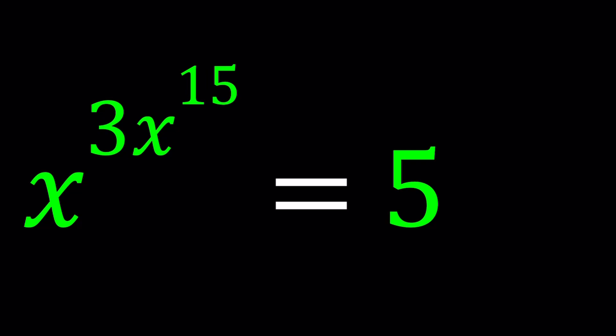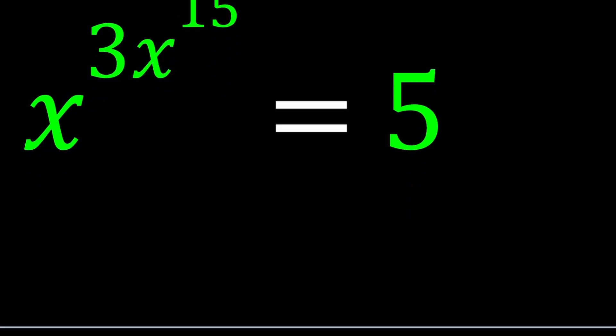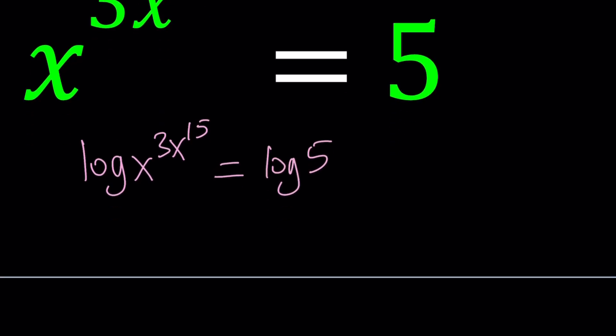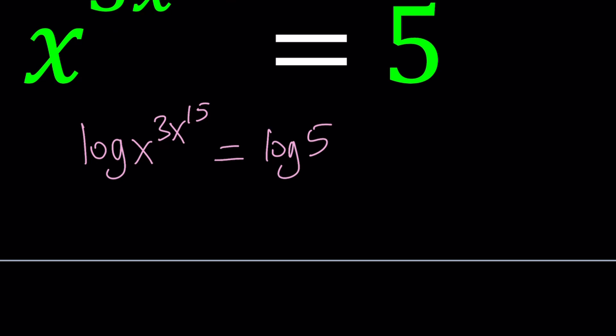So one thing you can do is log both sides and the base doesn't matter that much. You can use natural log, you can use base 10. Let's just say we use log. And the properties of logs are very similar. It doesn't really change by base. The only thing that changes is when you log both sides, we're going to get equivalent expressions, but they're just going to look different.